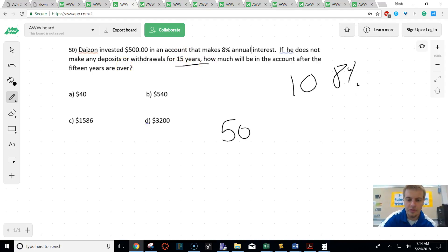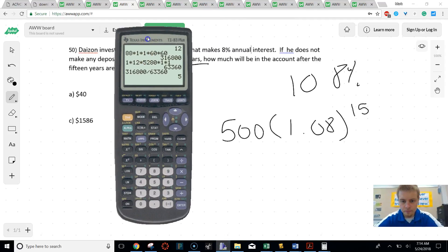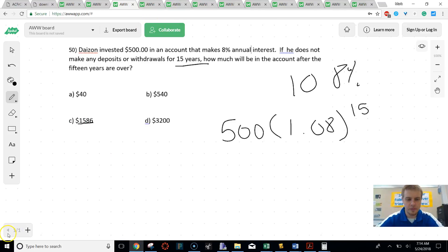So our equation becomes 500 times 1.08 to the 15th. And then when we do that, we're going to get around $1,586.